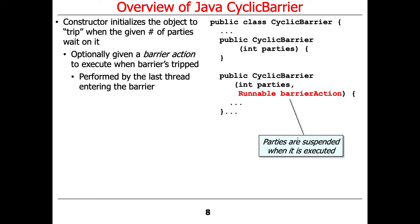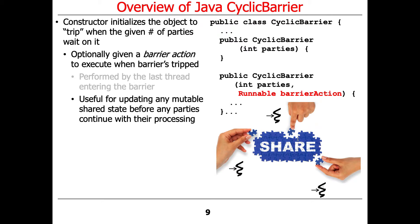This barrier action is always performed by the last thread that enters the barrier. When this action occurs, all the other parties or threads will be suspended, so you don't have to worry about corruption due to race conditions. The barrier action is mostly useful for updating any mutable shared state before any of the parties continue on with their processing.